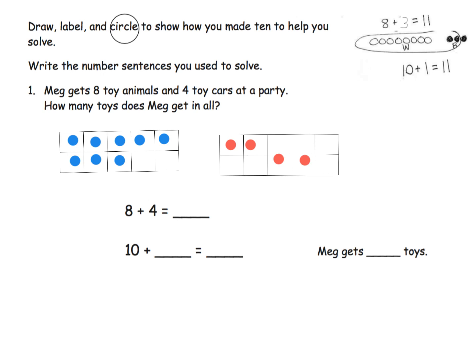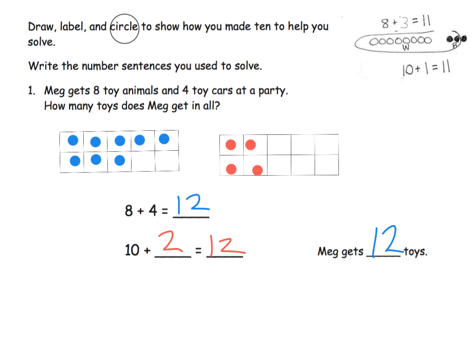Now we want to figure out how many toys in all. The question starts with eight plus four, but we want students to see that if we take these and move them over, we now have the same number of dots — all we did was move a set of dots. But now we have ten plus two, and ten plus two is twelve because we know our ten plus facts. That means eight plus four is twelve, so Meg gets twelve toys.